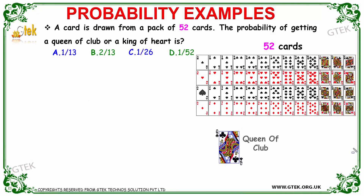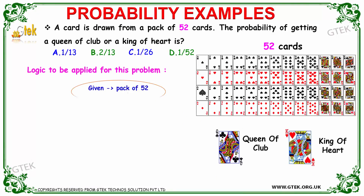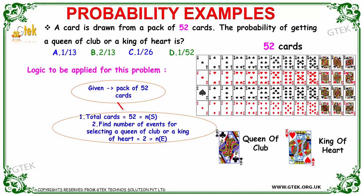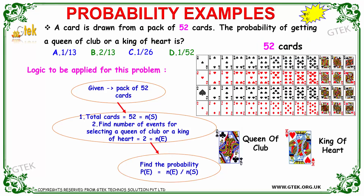Now, we have a pack of 52 cards. The question is about the probability of getting a queen of clubs.